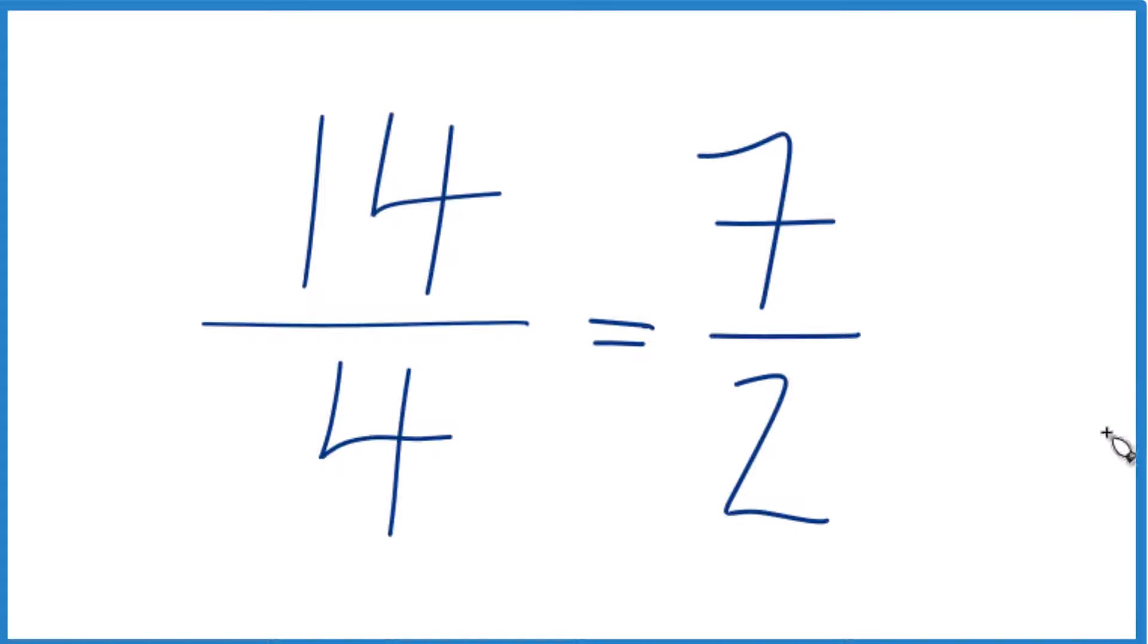If we want to write this as a mixed number, we can do that too. That's because we have an improper fraction. The numerator 7 is greater than the denominator 2. So we'll write our improper fraction as a mixed fraction.